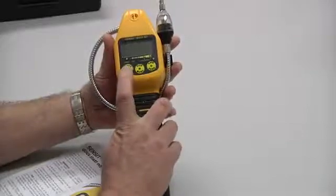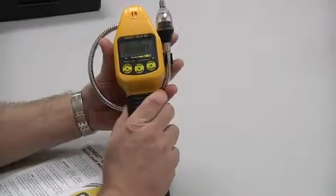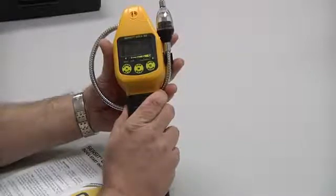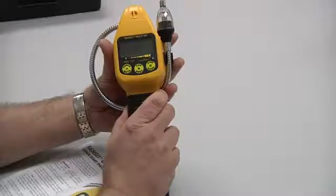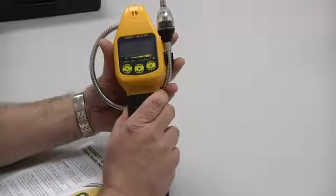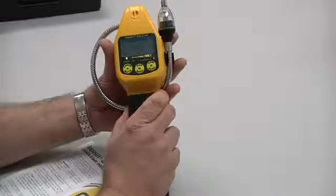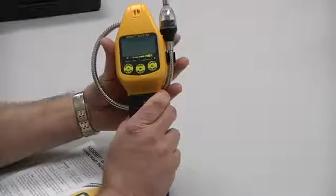To turn the instrument on simply push the A button, hold it down until the display begins to illuminate. The instrument will go through a warm-up period in which time it is doing a complete system check. During the system check the microprocessors will go through to identify any sensor issues, any pump issues, or any other problems that may exist within the instrument.